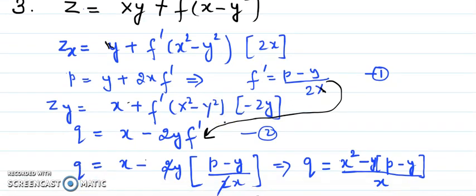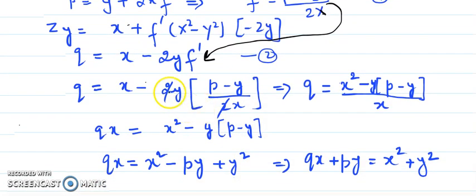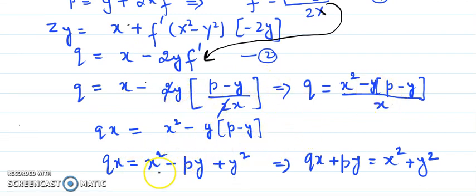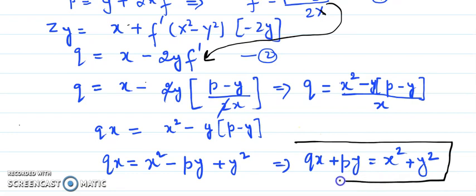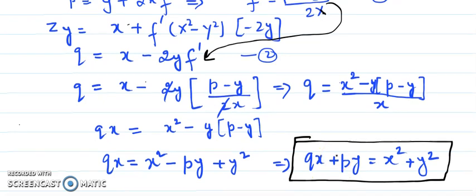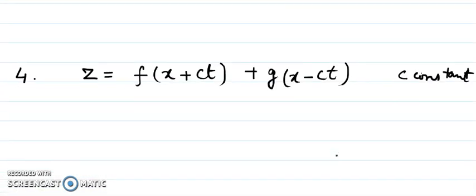Substituting f' and cross-multiplying after simplification, we get qx + py = x² + y² as the partial differential equation. It is first-order since p and q represent first-order partial derivatives.